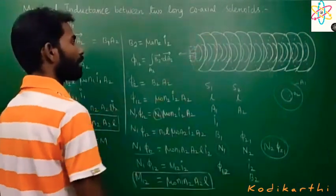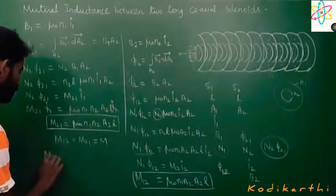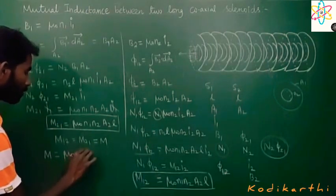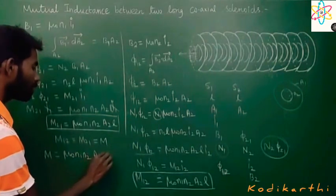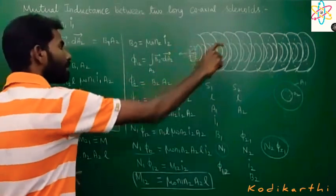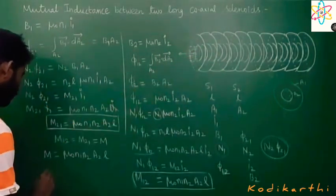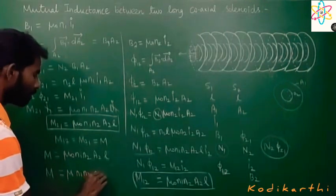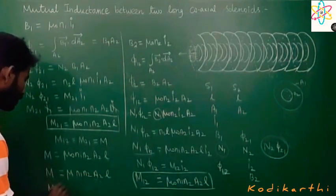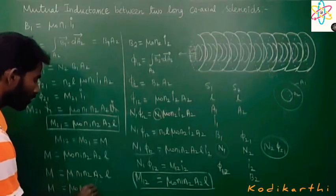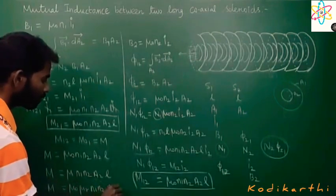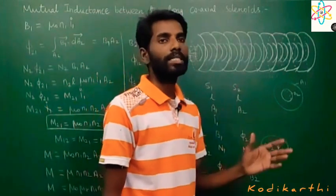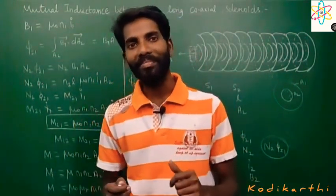So M₁₂ equals M₂₁, we can write it as M. If the solenoids contain magnetic material, we can write M equals μn₁n₂A₂/L, where μ is the permeability μᵣμ₀. This is the equation for mutual inductance between two coaxial solenoids. Thank you.